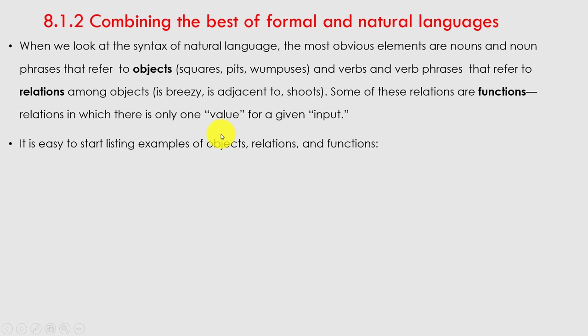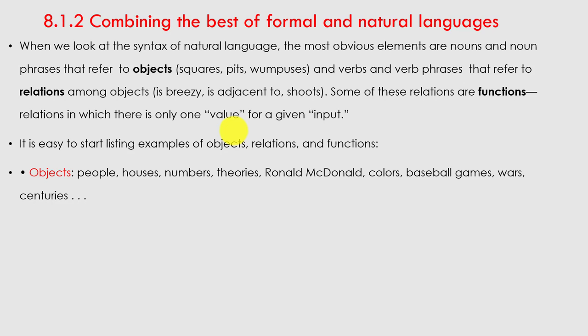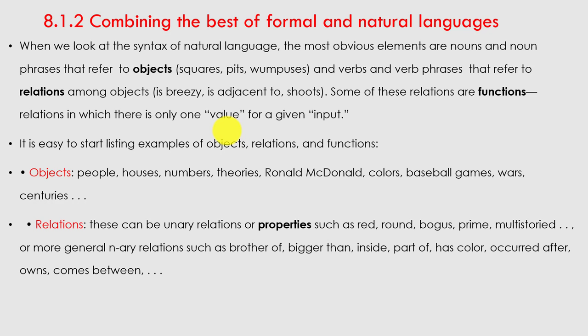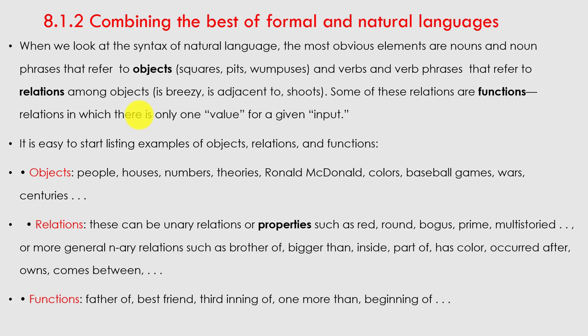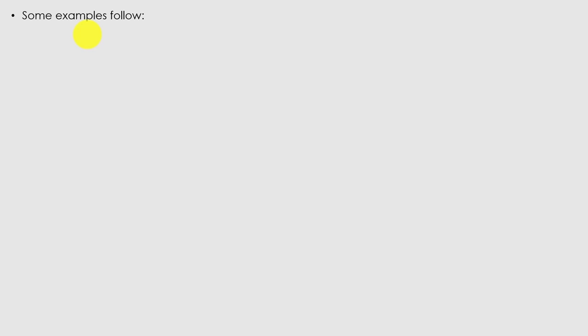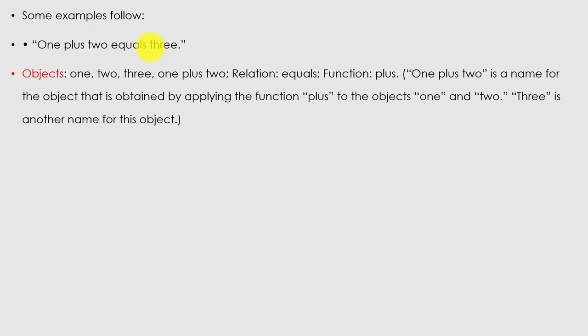It is easy to start listing examples of objects, relations, and functions. Objects can be people, houses, numbers, etc. Relations or properties can be red, round, bogus, prime. Functions include 'father of,' 'best friend,' 'third inning of,' 'one more than.' These are examples of how we combine formal and natural language. For example, '1 + 2 = 3' — here the objects are 1, 2, 3; the relation is 'equals'; and the function is 'plus.'